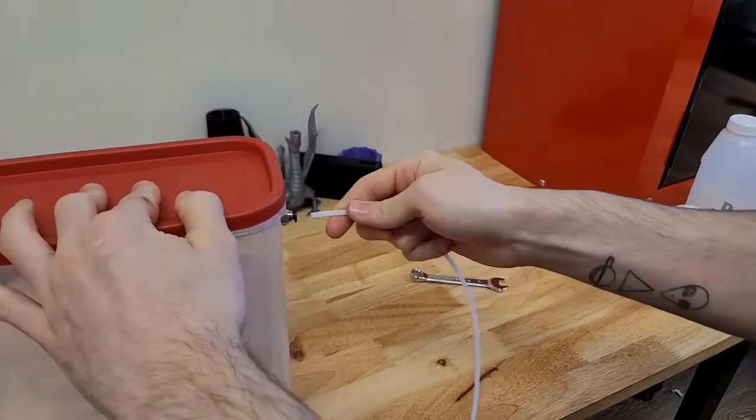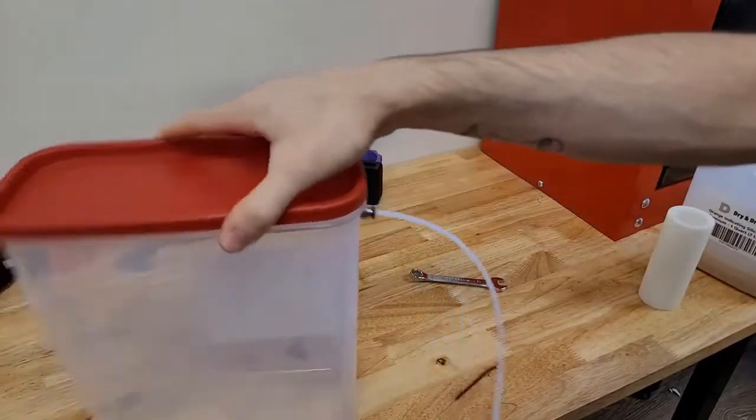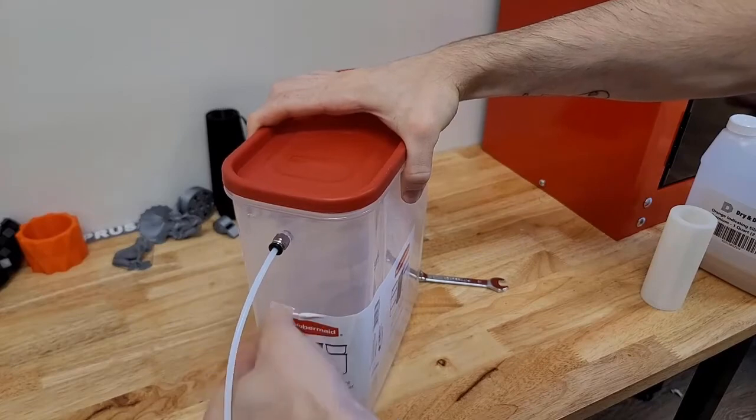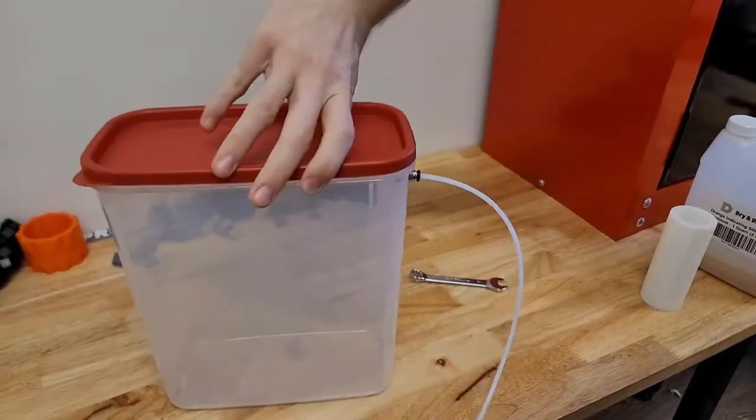Then you're going to get your bowden tube and put it in this hole here. It should just go right in. Then you can take off any kind of labeling or whatever. That's what I do right here.